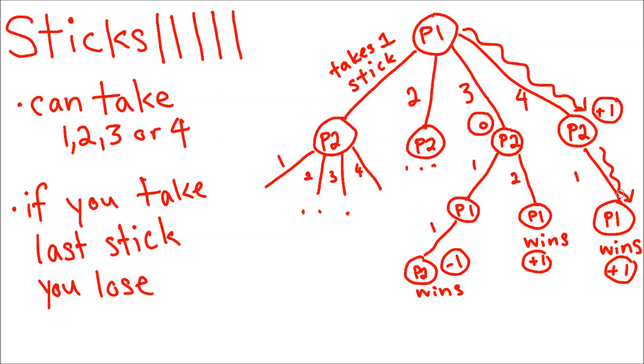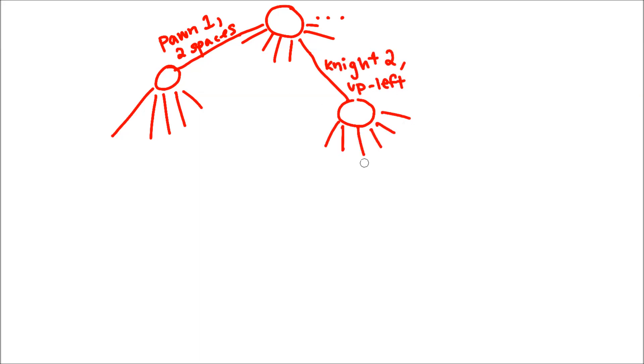This game may seem really basic, but we can extend this tree structure to other games. For chess, for example, our first layer would have 20 different branches because we have eight pawns that can move one or two spaces, and two knights that can move forward and left or forward and right.